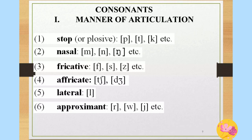Stop or plosive includes letters like P, T, K. Nasal has sounds like M, N. Fricative includes F, S, Z. Affricate is represented by sounds like CH and J. Lateral is L, and approximant includes R, W, J.